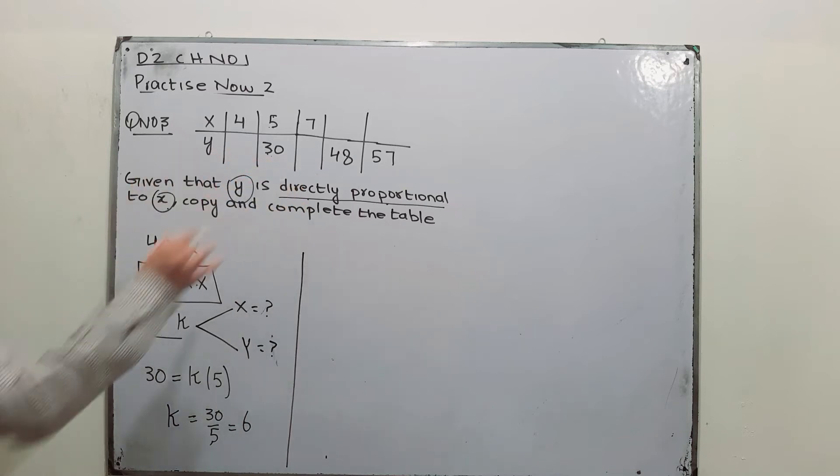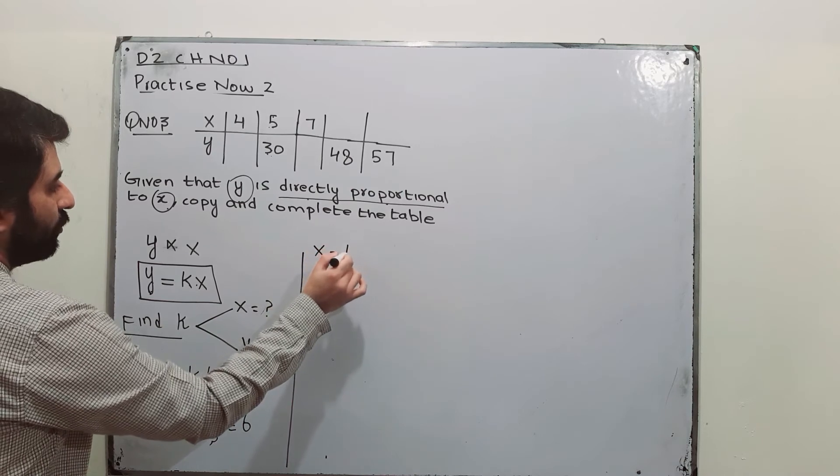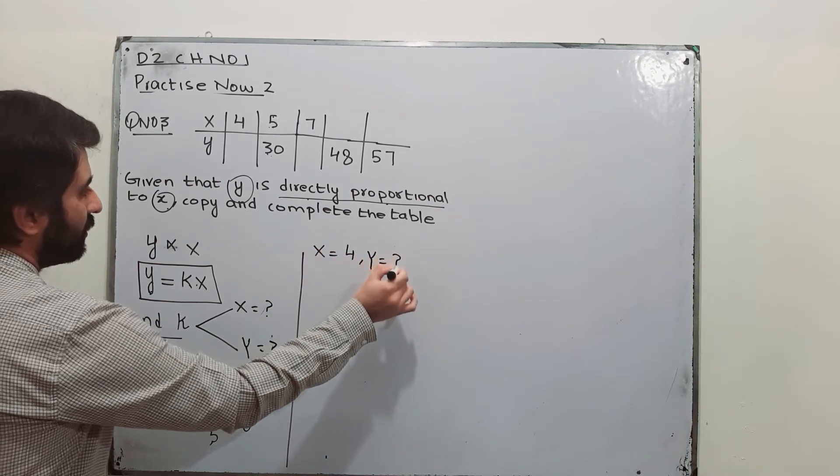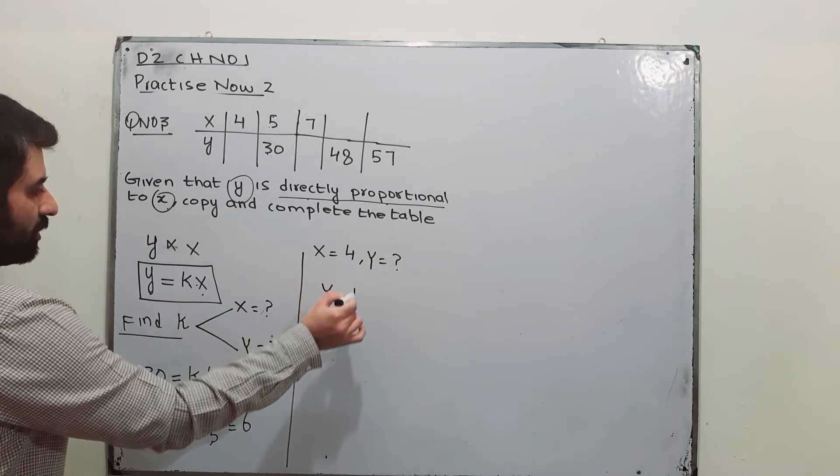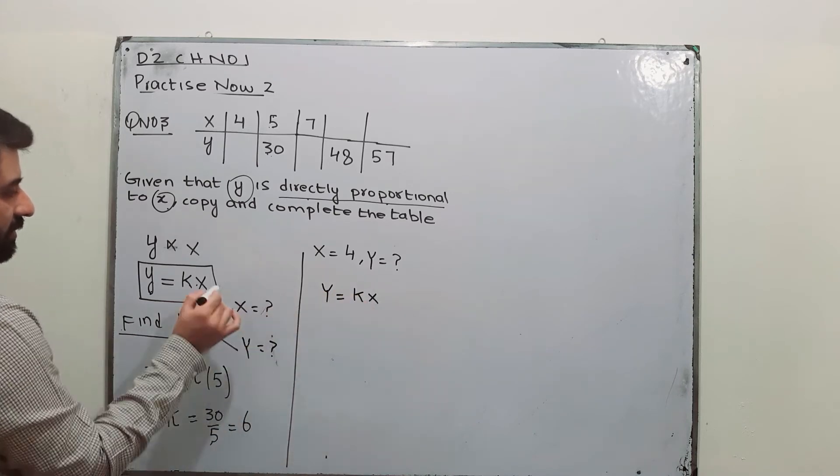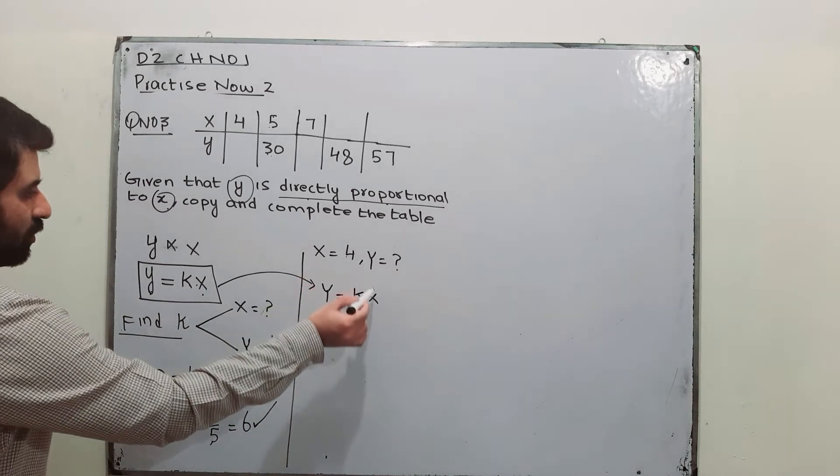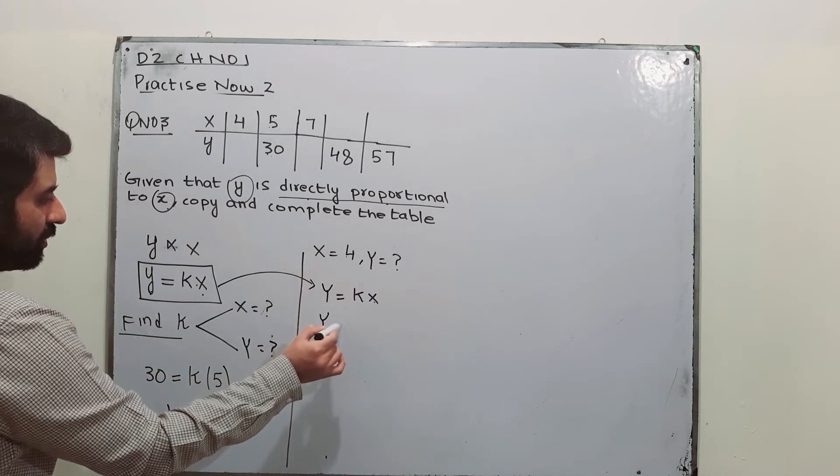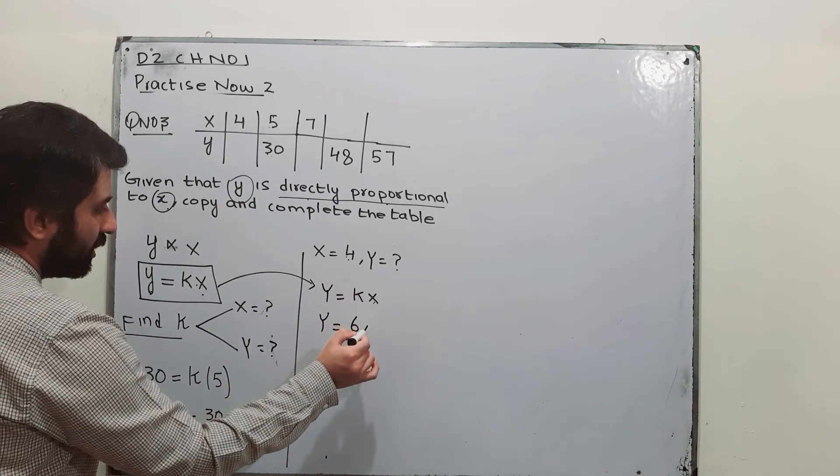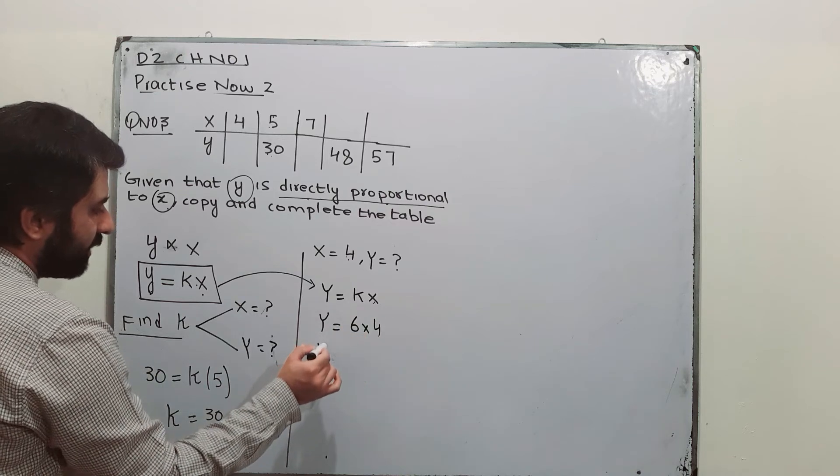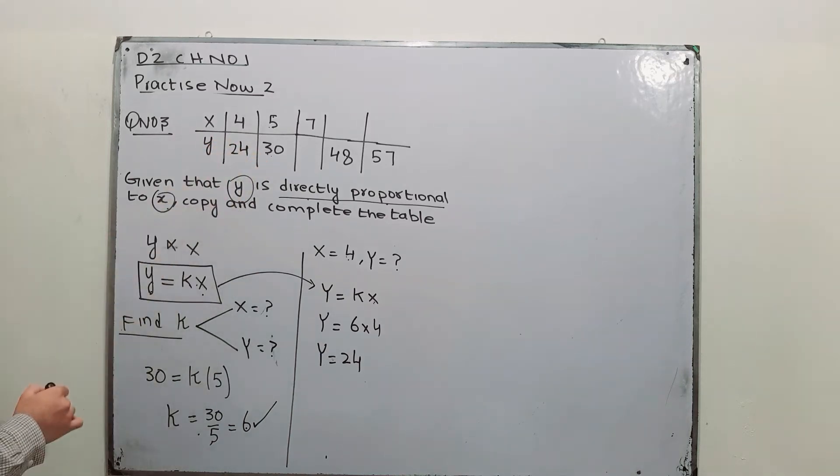Now you can fill out your table. When X is 4, you need to find Y. Using this equation, Y is equal to K, where K is 6, put X equal to 4. K is 6, X is 4, you can find Y, that is 24. So this value is 24.